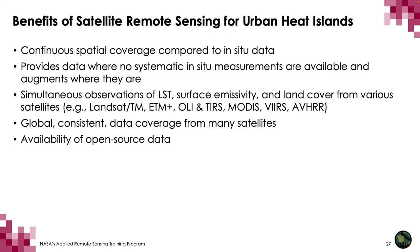Here are some of the benefits of using satellite remote sensing for urban heat islands. Satellites provide continuous spatial coverage compared to in-situ data, and provide data where no systematic in-situ measurements are available. They provide simultaneous observations of land surface temperature, surface emissivity, and land cover from various satellites. Satellites provide global, timely, consistent data coverage, and thanks to NASA and other space agencies' open-source policies, data is freely and publicly available to anybody on the planet.